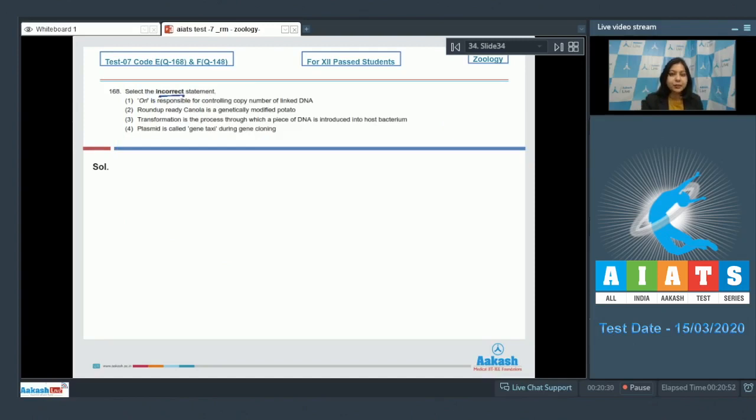Select the incorrect statement. Number one, 'ORI is responsible for controlling copy number of linked DNA.' This is a correct statement, as ORI is the origin of replication and the copy number is controlled by the origin of replication.